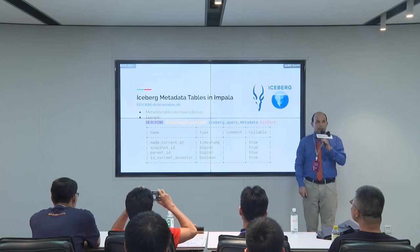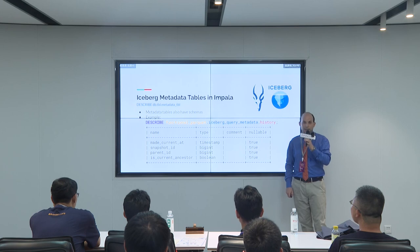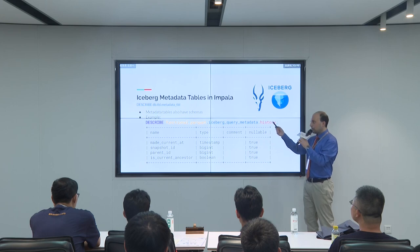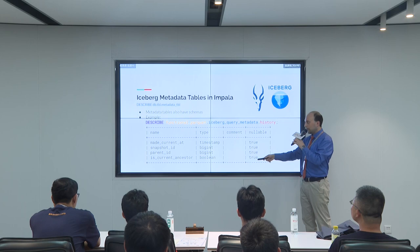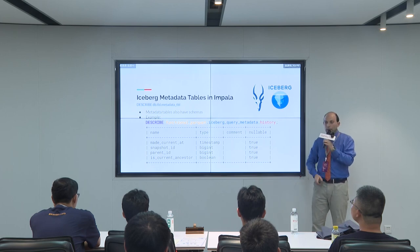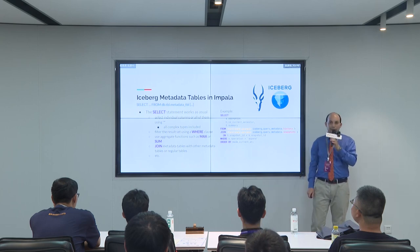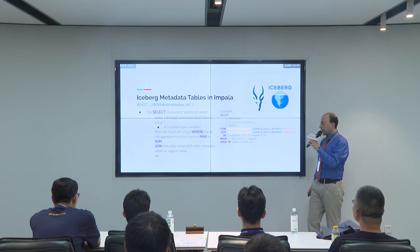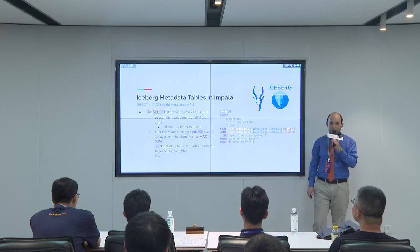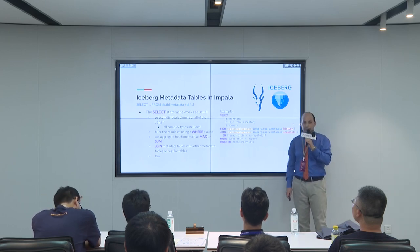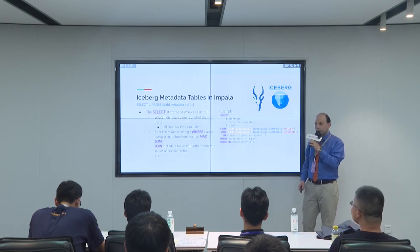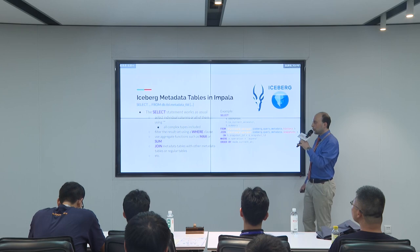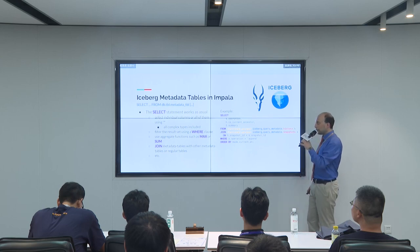The next command is 'describe'. Just like regular tables, metadata tables also have a schema, and you can query this schema using the describe command. For example, the 'history' table has four columns — you can see the types and some extra information. Most importantly, you can query metadata tables using the usual select statement, querying individual columns or all of them using star. A difference from regular tables is that for metadata tables, complex types like arrays, maps, and structs are always included in select star results, whereas for regular tables they are not.